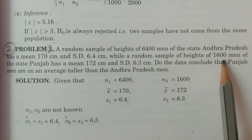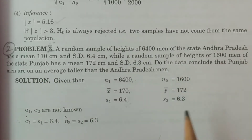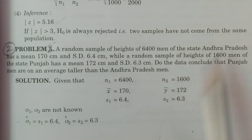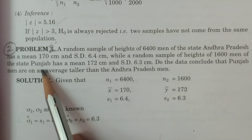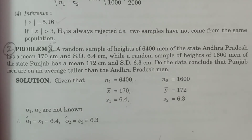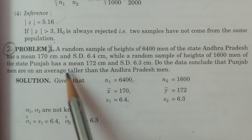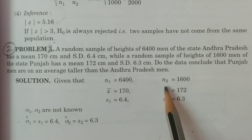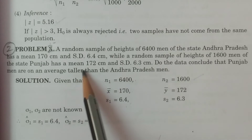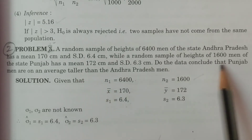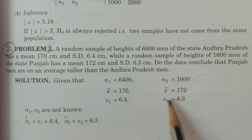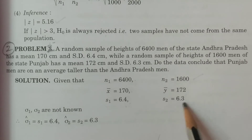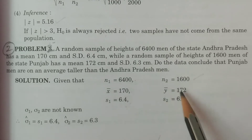A random sample of heights of 1600 men of the state Punjab is the second sample — so this is a two-sample problem. One sample is from Andhra Pradesh and one sample is from Punjab. Therefore n2 = 1600, ȳ = 172 cm, and s2 = 6.3 cm.